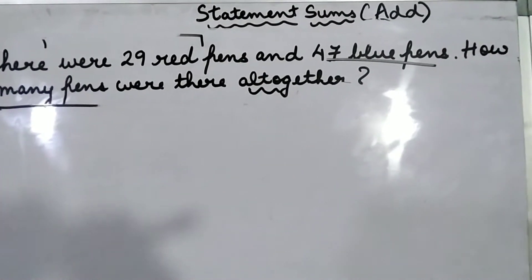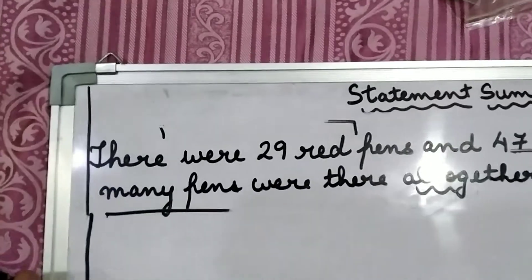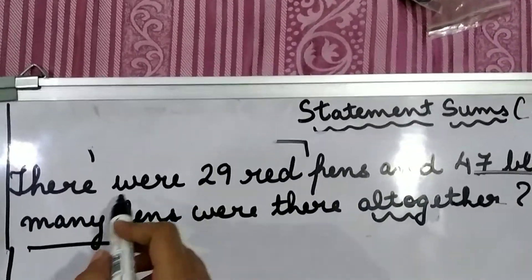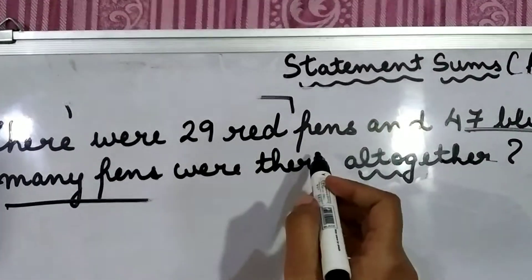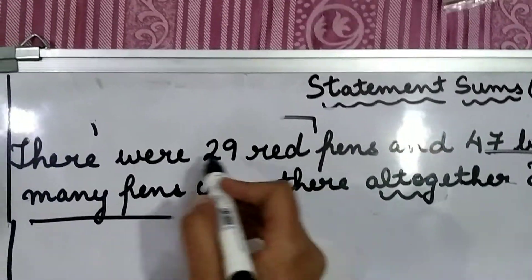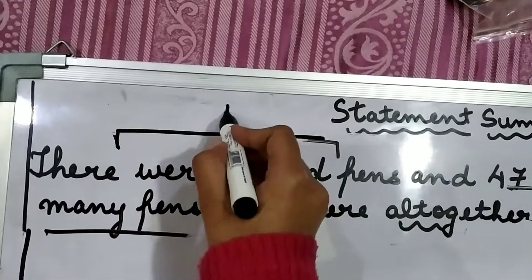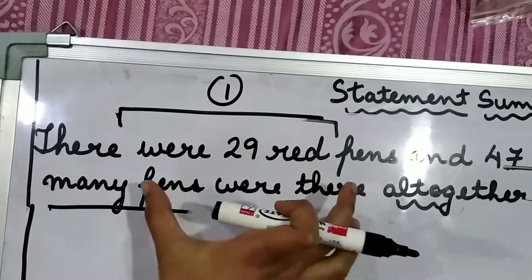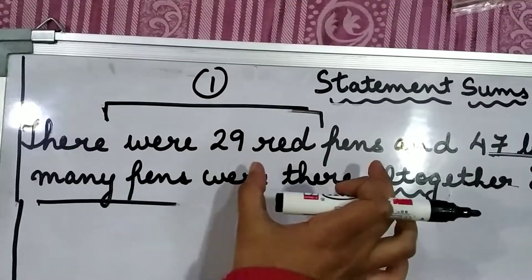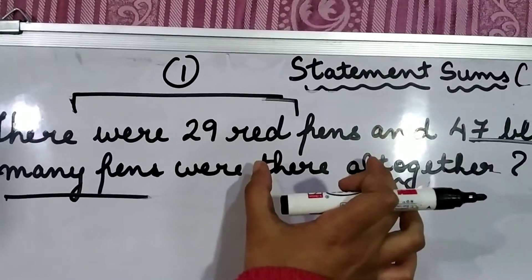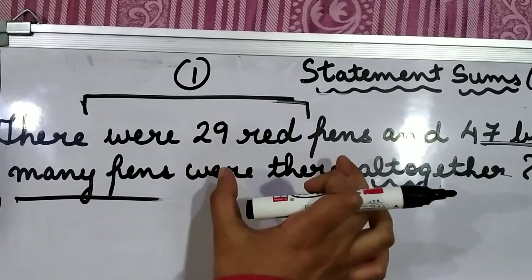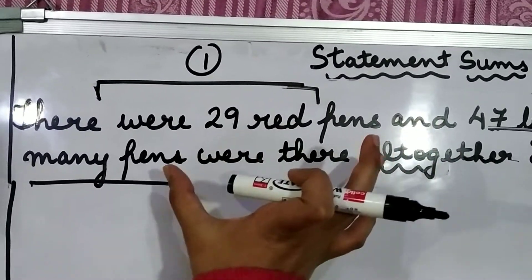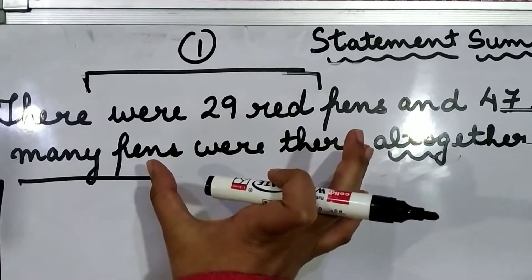We are going to go part by part. The first part of the question is: there were 29 red pens. So this is the first part — there were 29 red pens. How many red pens? 29. This is the first part.